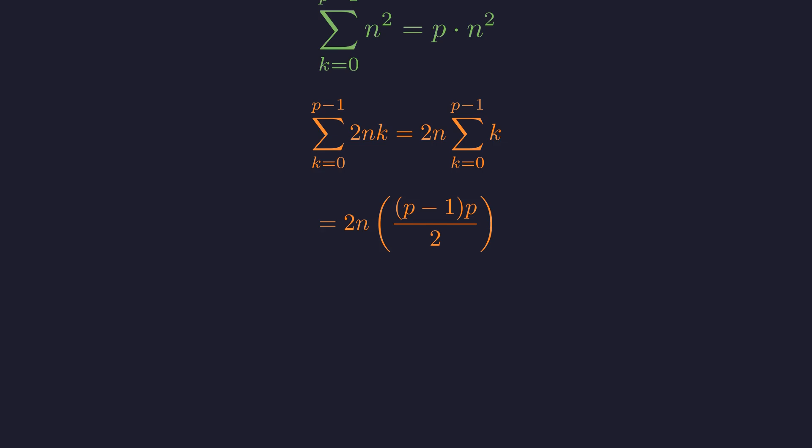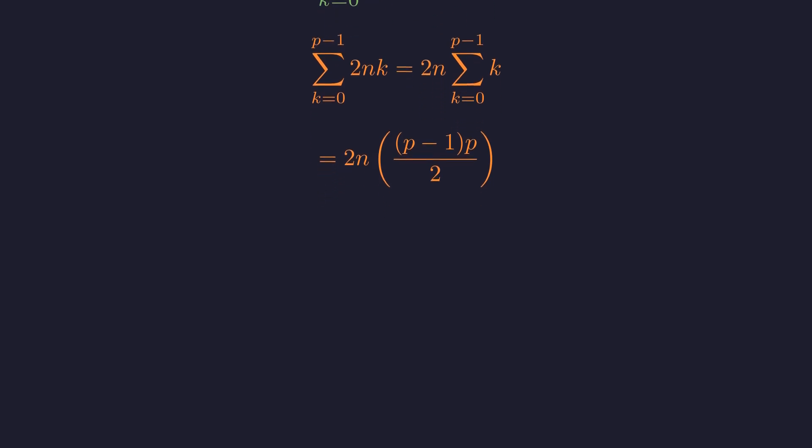The sum of integers from 0 to p-1 is given by the formula p times (p-1) divided by 2. This is a fundamental result in discrete mathematics. Simplifying, the 2 in the numerator cancels with the 2 in the denominator, giving us n times p times (p-1).